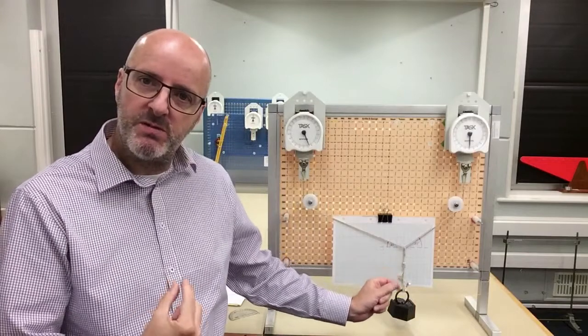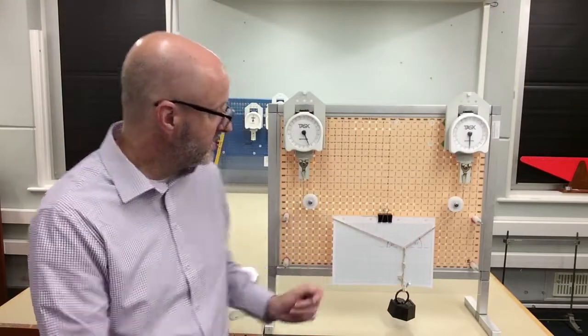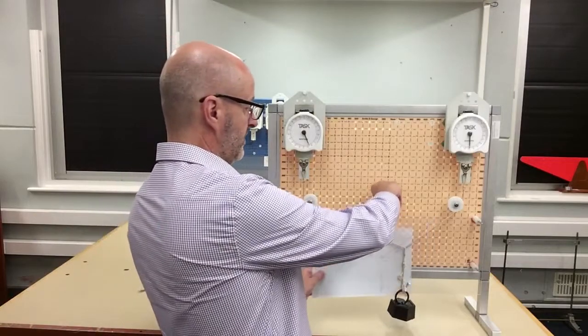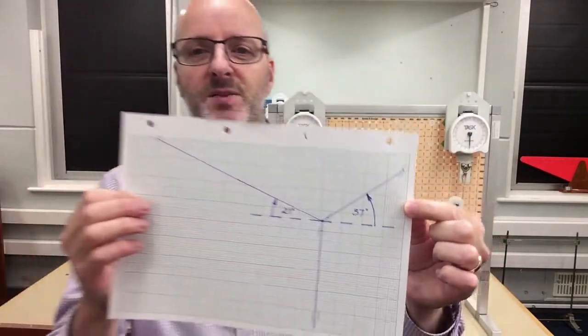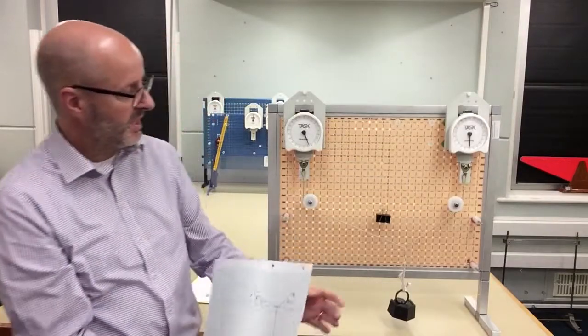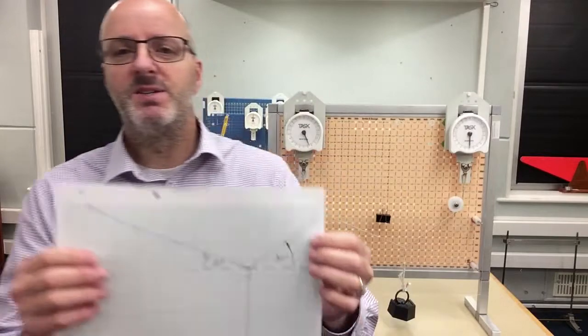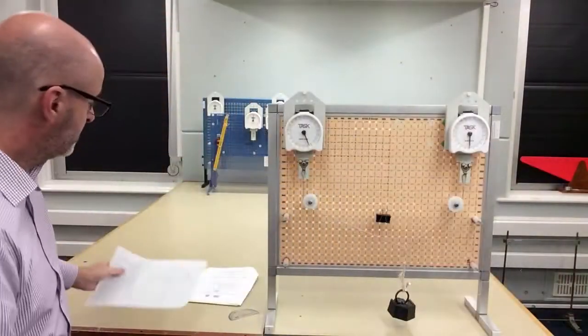You need two more pieces of information and that's what we've got here: these two angles. So if I remove this piece of paper here I can show you the two angles I've recorded there. The angle on this side was 21 degrees and the angle on the other side was 37 degrees from the horizontal.